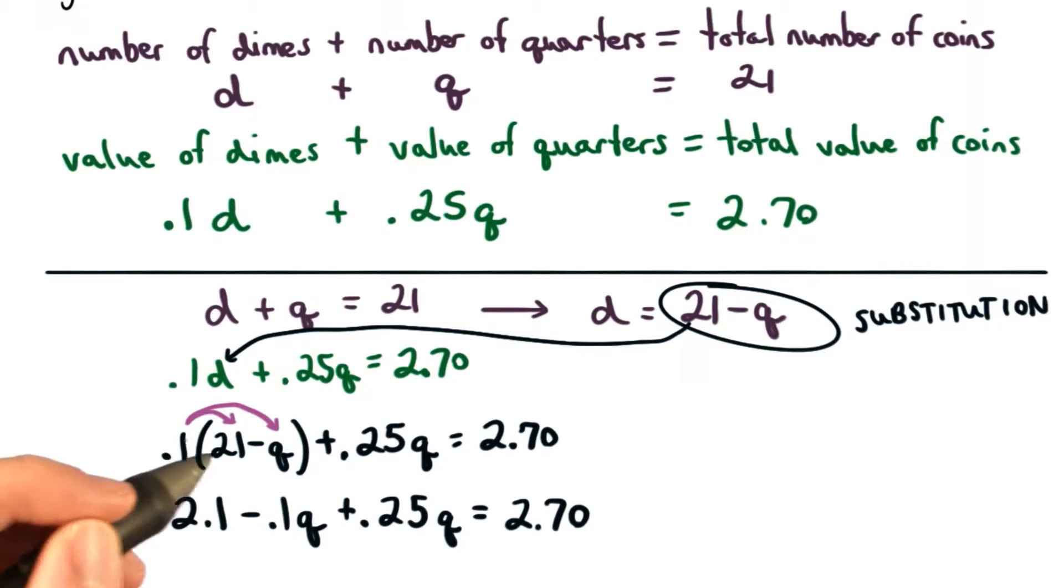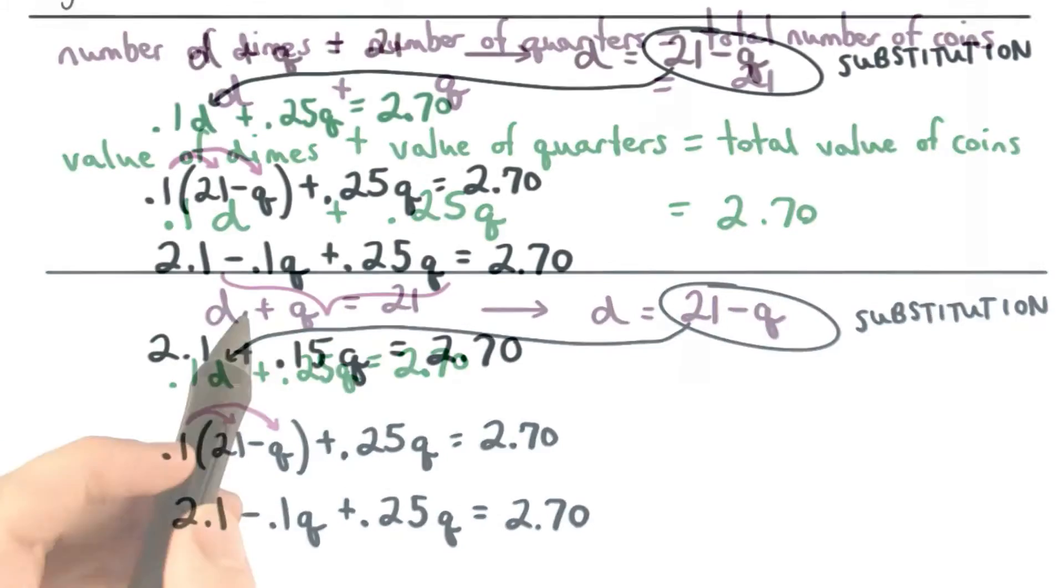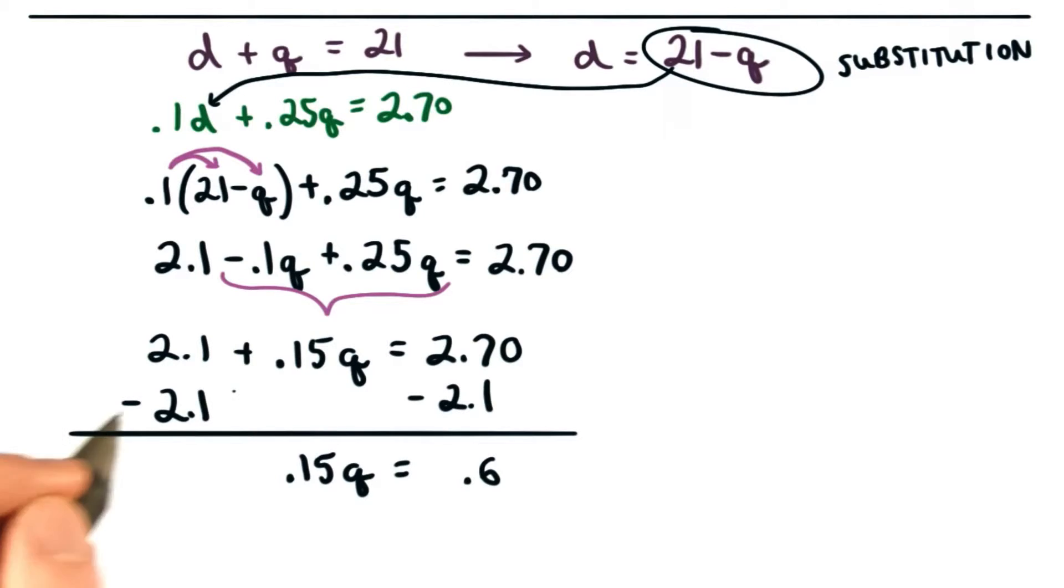Next I distribute one-tenth to 21 and negative q. I combine like terms. Next I subtract 2.1 from both sides. And finally, I divide both sides by 0.15. And we get q is equal to 4.